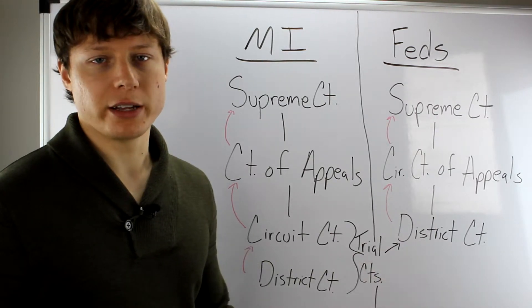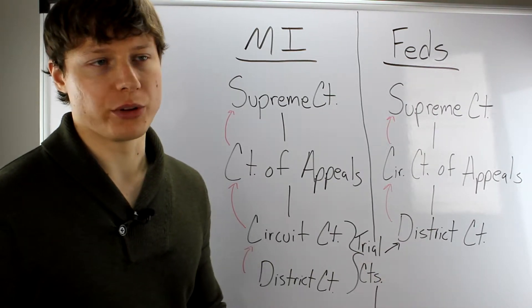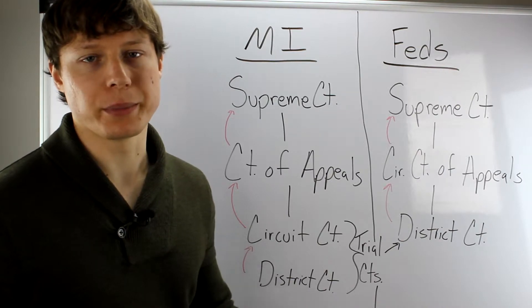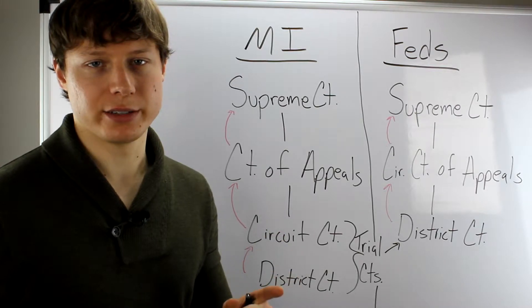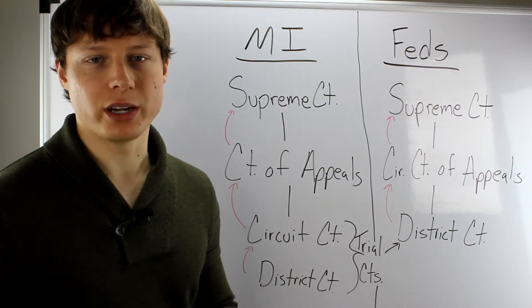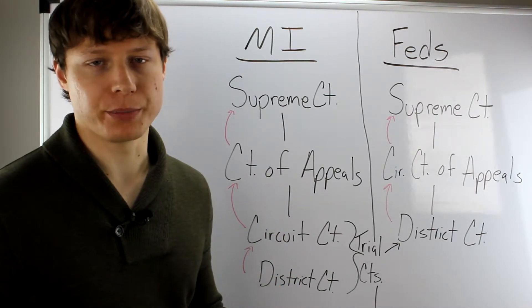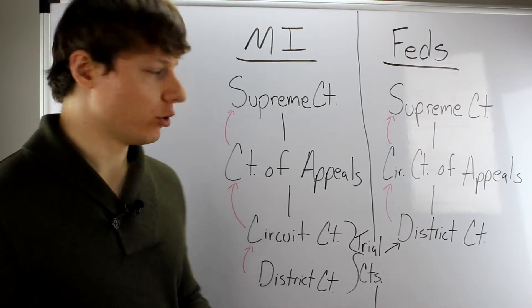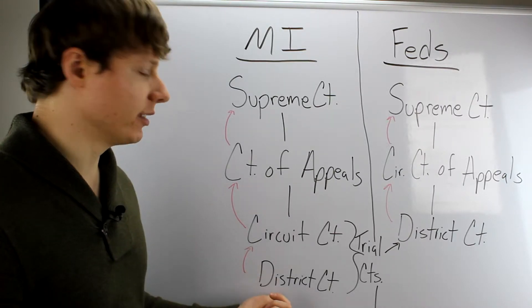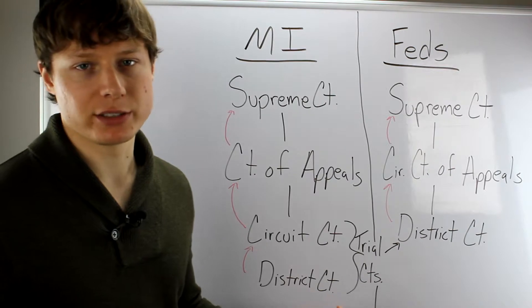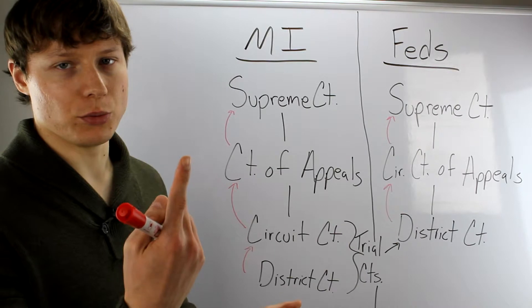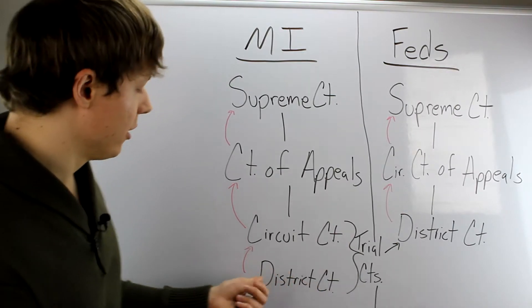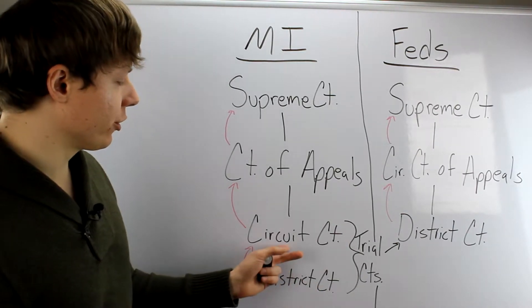So let's say that you win or you lose and you want to go up or the other person wants to go up on appeal. The very first time you do what's called an appeal by right. Everybody gets one gimme, gets one free appeal, in other words. So let's pretend that you started off in district court and you lost and you want to appeal it. You're going to do what's called an appeal by right and you're going to go up one chain in command. So you're going to go from your district court to your circuit court.